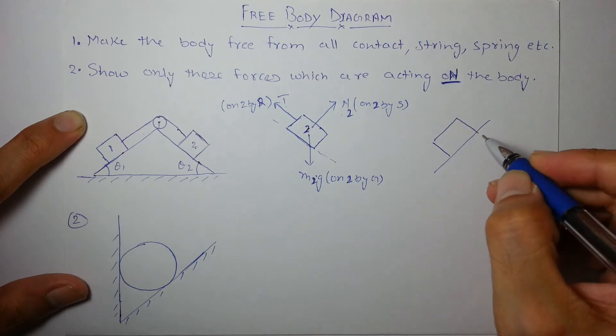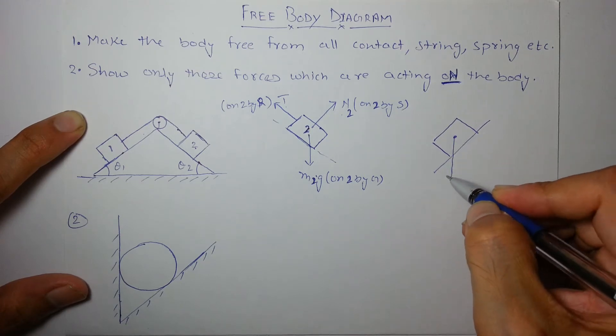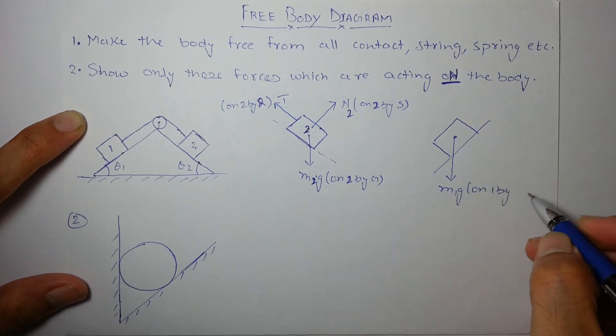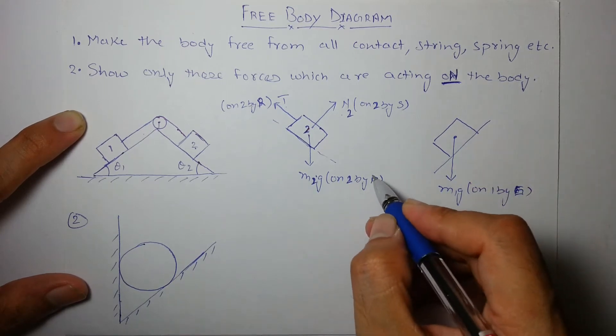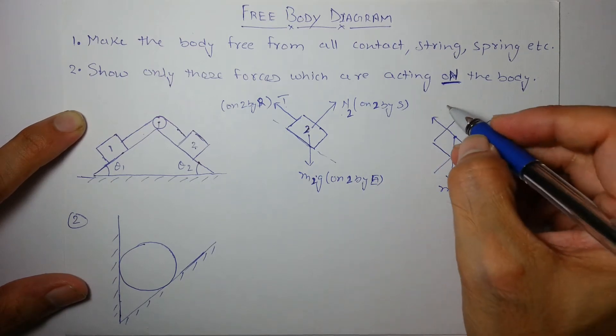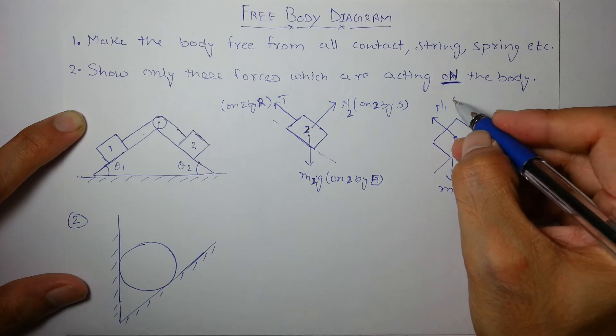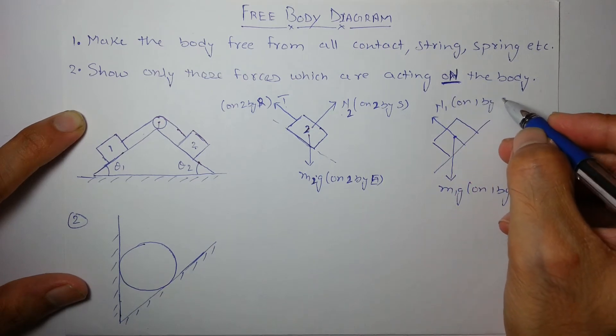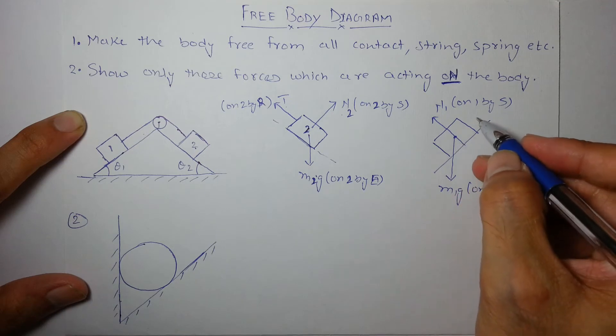It should be earth, okay. Gravity is by earth, normal, let's say n1 on one by incline or by surface, and this tension on one by rope.